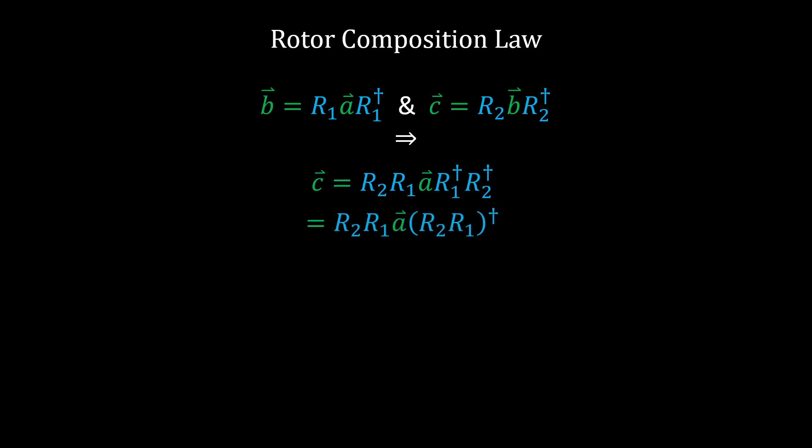Then I, in fact, have vector C formed from A, which is first rotated by rotor 1, and then rotor 2.